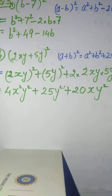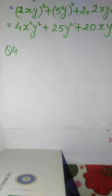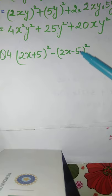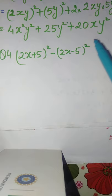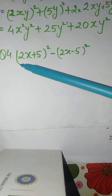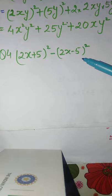You have to remember these identities of (a + b) whole square and (a - b) whole square. Now question number 4: simplify using these identities — (2x + 5) whole square minus (2x - 5) whole square. Here you can apply (a + b) whole square and (a - b) whole square, or you can apply the identity of a square minus b square, which makes it easier.